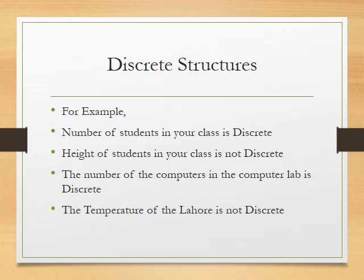For example, the number of students in your class is discrete. Whether it is 10, 20, or 30 — whatever the count — those are discrete values. Similarly, the number of computers in the computer lab is discrete. However many computers are there — 10, 15, or any number — those counts are discrete values.